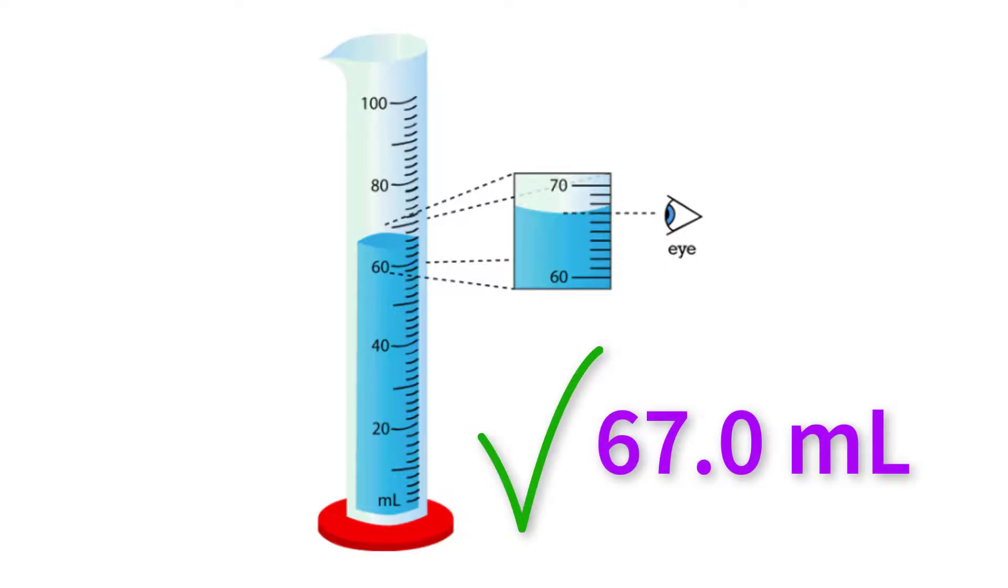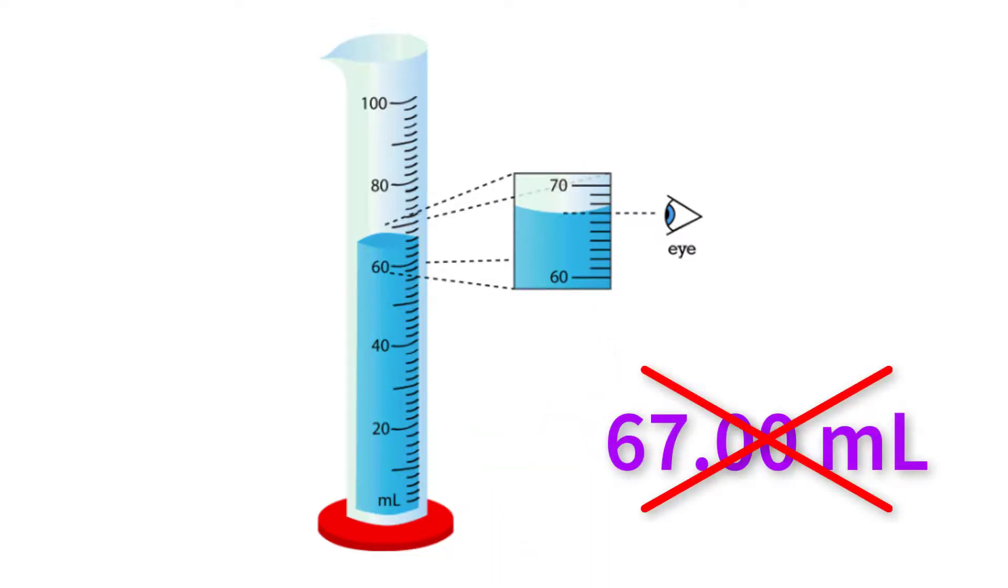You can use the number of digits that correctly represent the precision of your measuring instrument and techniques. In this case, however, the starting amount was 32.5 milliliters. This measurement is only precise to three significant digits.